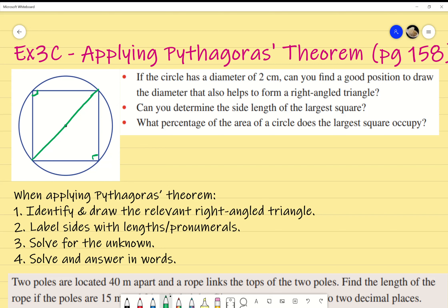Can you determine the side length of the largest square? How do we do that? How would we find the side length? I know that this length here, what's the green line right there? What's the length? The diameter is 2, so it's just 2 centimeters. Because the radius would be 1, but the diameter is 2, so we leave that as 2.